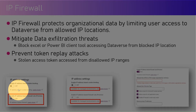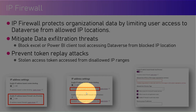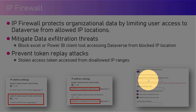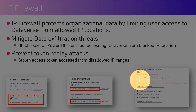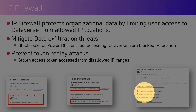IP firewall can be configured using the IP address setting in the Power Platform Admin Center. You need to enable the IP address-based firewall and then specify the list of IP addresses from which your Dataverse requests will be handled and allowed.